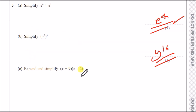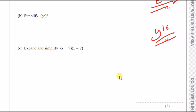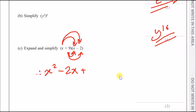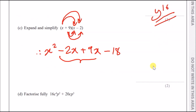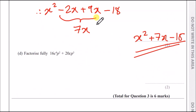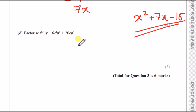Part c: expand and simplify the double bracket. Using the arrow method: x times x gives x squared; x times minus 2 gives minus 2x; 9 times x gives plus 9x; 9 times minus 2 gives minus 18. Tidy up the middle terms: minus 2x plus 9x is 7x. Final answer: x squared plus 7x minus 18.